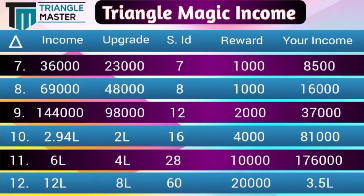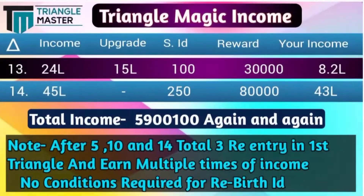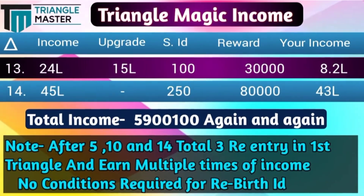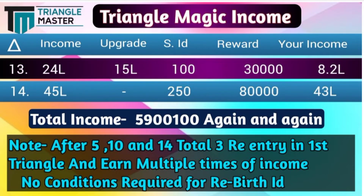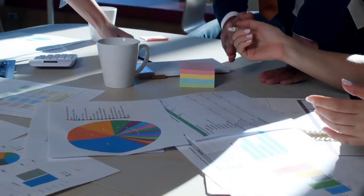Similarly, you can see the Tringle magic income levels. Whenever your income reaches 12,000, you receive your first reward of 500 INR. At 3,000 income, 3 direct referrals are compulsory. From Tringle magic income level 5,900, you can earn again and again. Remember, after positions 5, 10, and 14 — a total of 3 re-entries in the first Tringle — you can earn multiple times. No conditions are required for the rebirth ID.